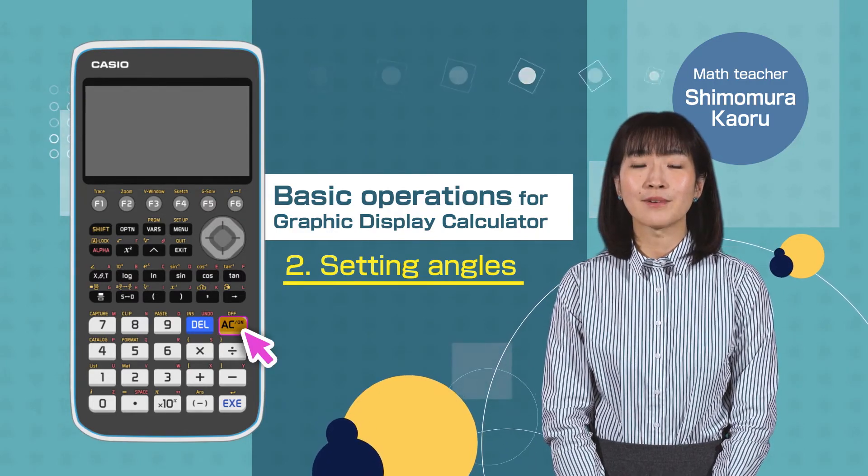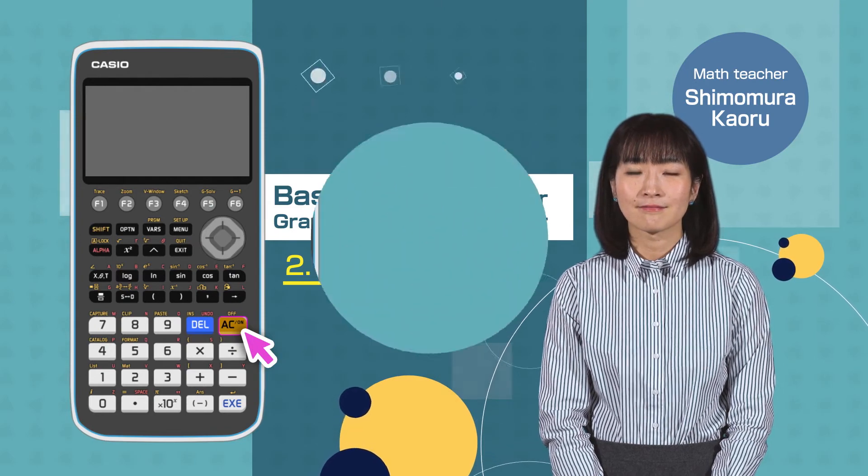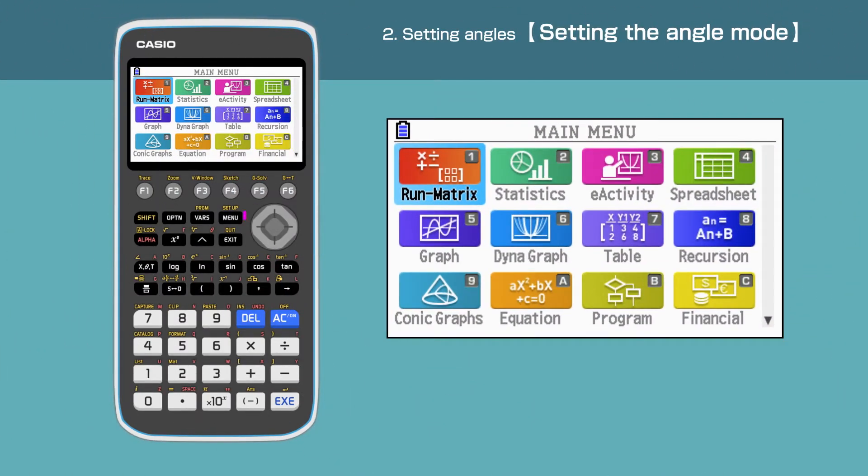Switch on your calculator pressing AC button. Press the menu button to open the main menu. Press 1 to enter the Run Matrix menu, or move the cursor and highlight 1, Run Matrix, then press Execute.